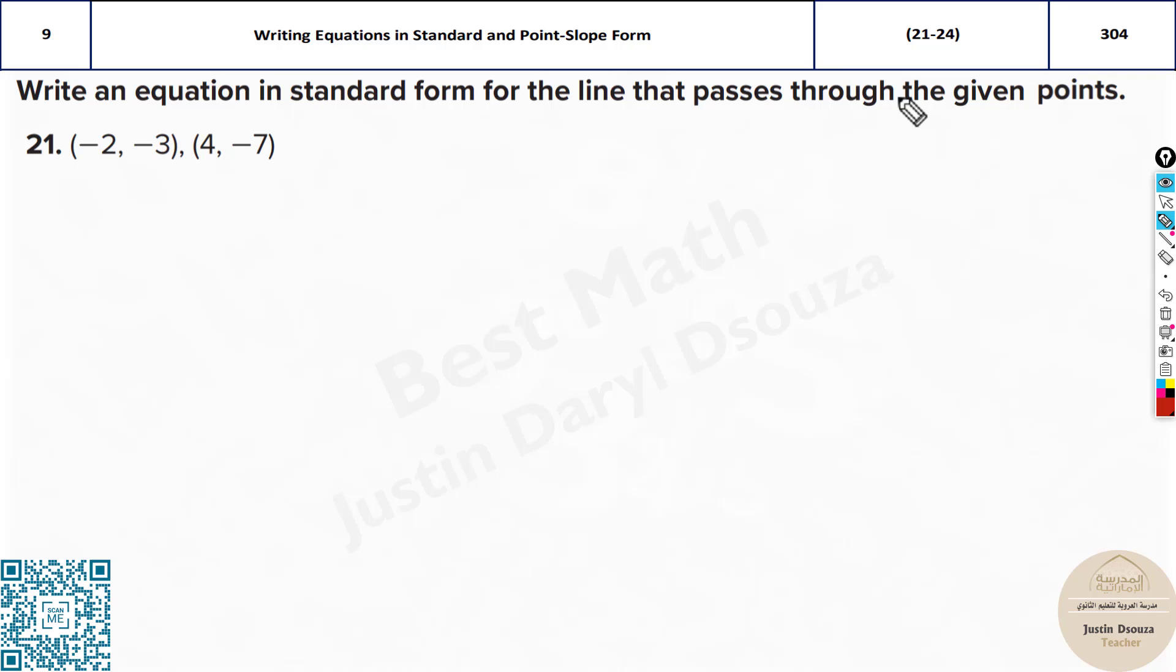Of course there are shortcut methods when you have four different options, we can easily find the correct answer, but I will just write the exact method as well for this one. We need to first find the slope. Whenever two points are given, we always know we have to find the slope: y2 minus y1 by x2 minus x1.